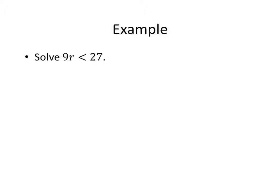On this one, how do you get R by itself? Divide both sides by 9. Do I switch my inequality? No, because I didn't divide by a negative. So R is less than 3.